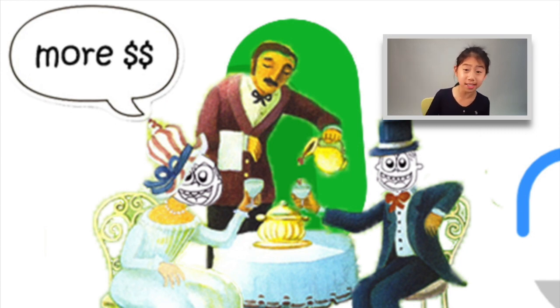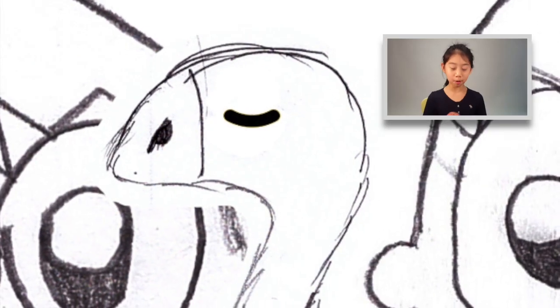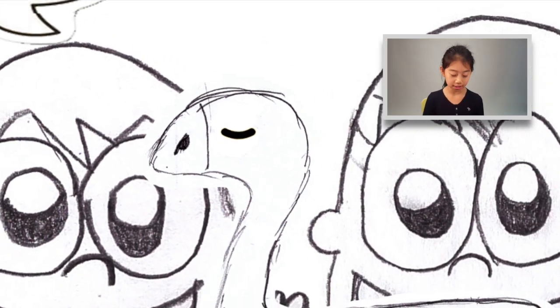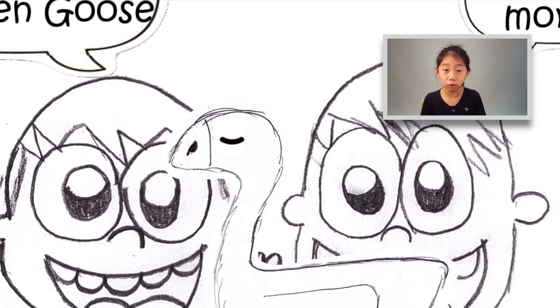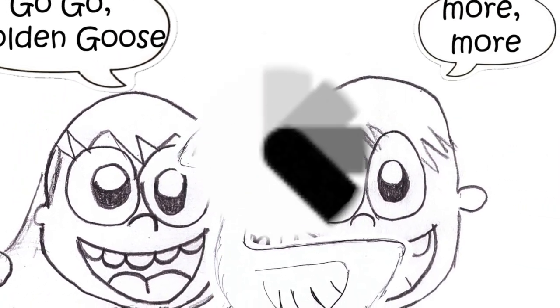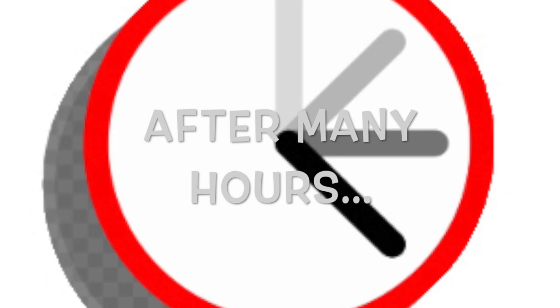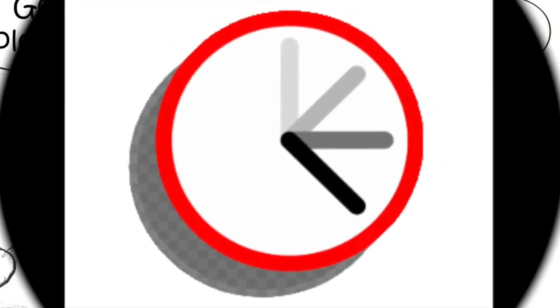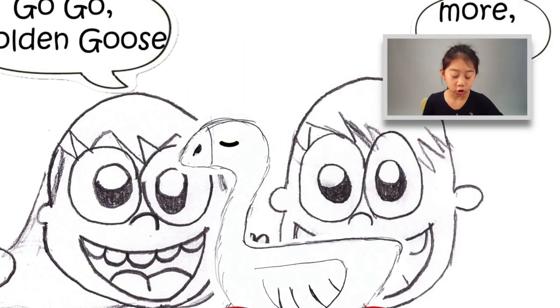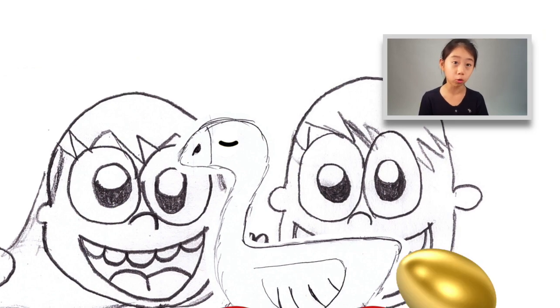They both looked at the goose hopefully. She began to cackle, the folks hardly daring to breathe. Did she? Could she have? the woman wondered. With trembling hands, the man reached under the goose, and his heart sank as once more he felt the cold, hard shape of a golden egg.